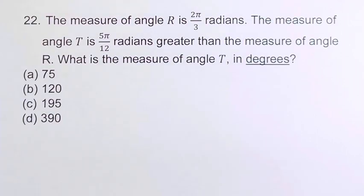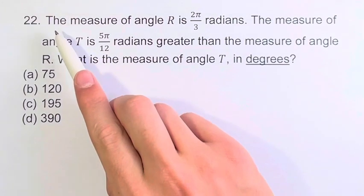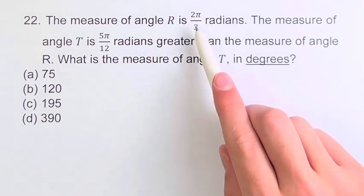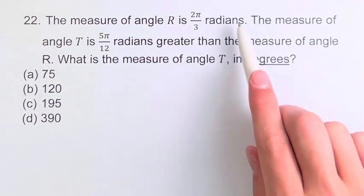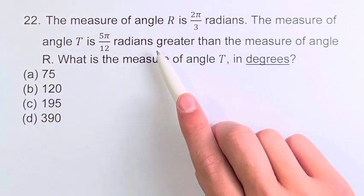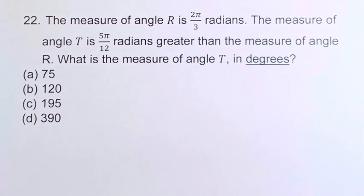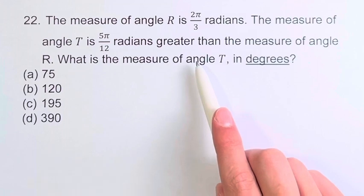Hello and welcome back to another video. In this problem we're told that the measure of angle R is 2π over 3 radians and the measure of angle T is 5π over 12 radians greater than the measure of angle R. We're asked what is the measure of angle T in degrees.